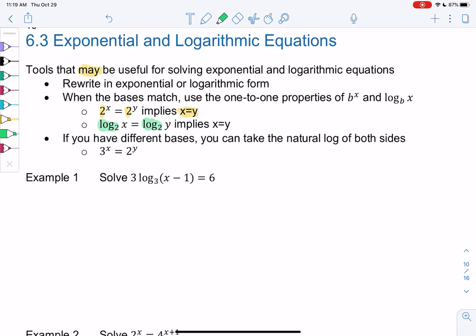If we have different bases then we'll use different properties. A common choice is to take the natural log of both sides. So an example might be 3^x equals 2^y, those are different bases. So we'll check all these out as we do examples.